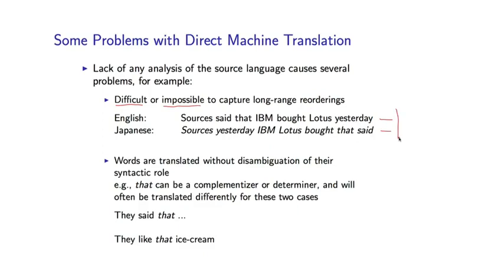So that's one challenge. The second one is that words are translated without any knowledge of the role, the syntactic role they play in a sentence. So if we take the word that, for example, in English, it can take two quite different syntactic roles. One is the complementizer of a clause. So if I say they said that I like ice cream, this is one very particular sense of the word that. On the other hand, if I say they like that ice cream, that is actually a determiner. So this would be a complementizer. This would be a determiner. And in many cases, when you translate into a different language, you will end up with different translations in these two different contexts. Again, with no analysis of the English source language, there's really no way to be able to distinguish these two cases and to translate correctly.